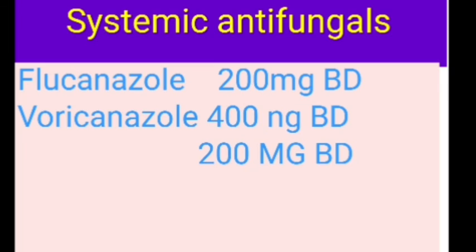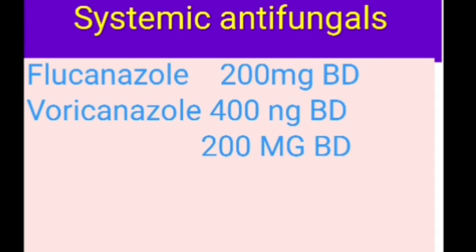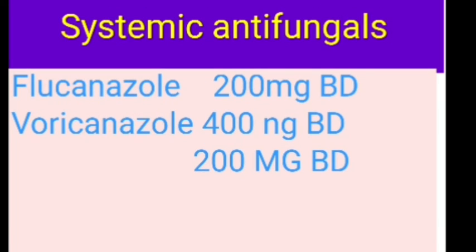Systemic antifungals are indicated when the corneal ulcer is very severe, deeper, near the limbus, or when fungal endophthalmitis secondary to fungal corneal ulcer is suspected. Options include systemic ketoconazole, fluconazole, or voriconazole. Fluconazole is given 200 mg BD; voriconazole 400 mg BD on the first day then 200 mg BD. Ensure the patient's liver function is normal before starting, and monitor liver function tests throughout the course, which should be at least 2-3 weeks.